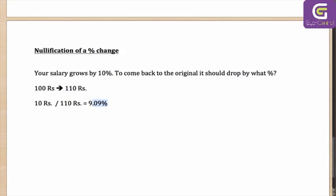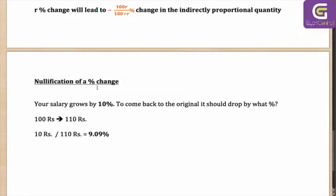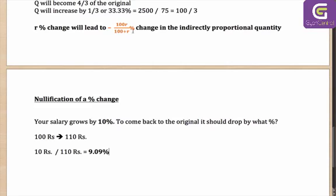As you can see, this is different from a 10% change. To calculate this, you can calculate the actual values, or once again you can use the formula from above: (-100R)/(100+R)%. Which means that if you have to nullify an R percent change, you can do it by a (-100R)/(100+R)% change.